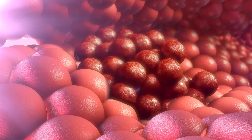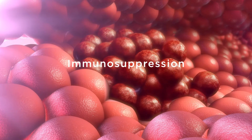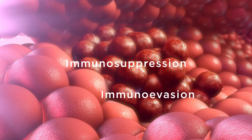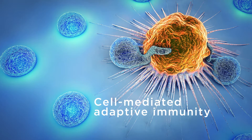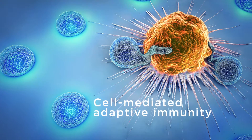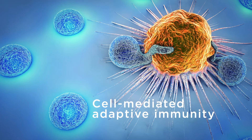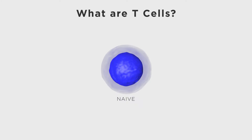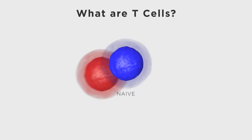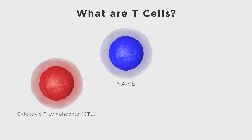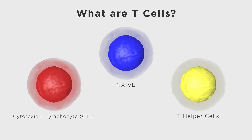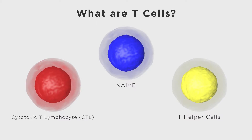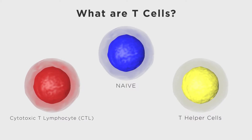Cancer is a disease that relies on immunosuppression and immune-evasion to manifest. T cells, as central players in cell-mediated adaptive immunity, are critical to cancer pathogenesis. Naive CD3-positive T cells can mature into either CD8-positive cytotoxic T lymphocytes, which target and destroy tumor cells, or CD4-positive T helper cells, which activate other immune cells such as CD8-positive CTLs.